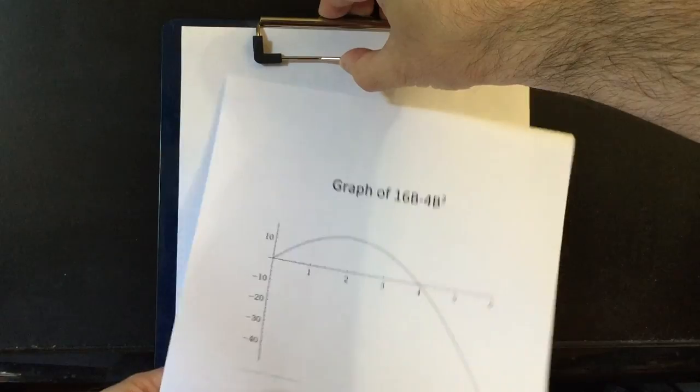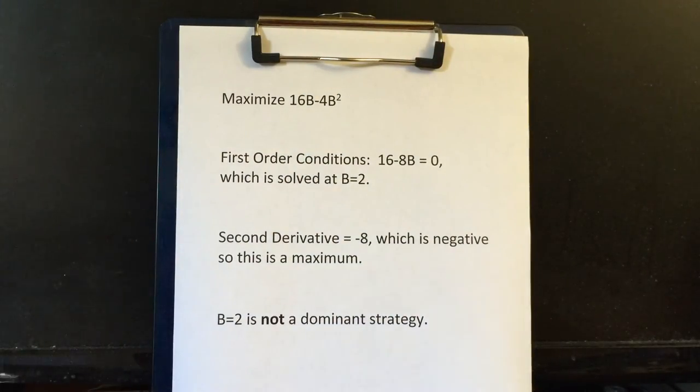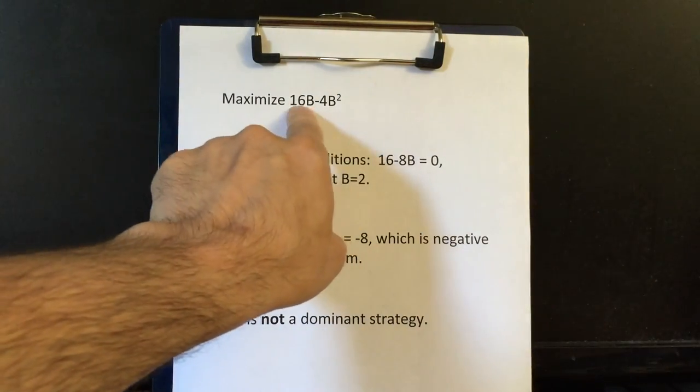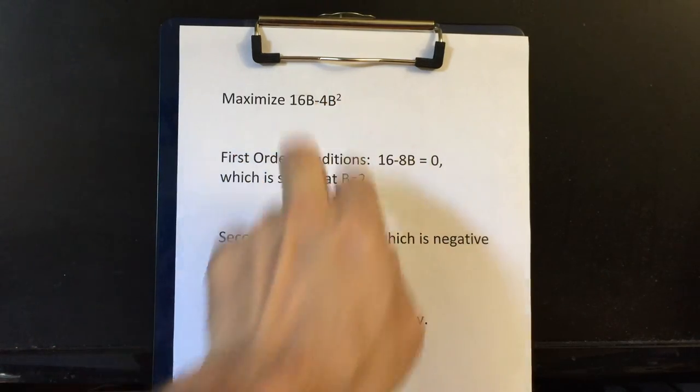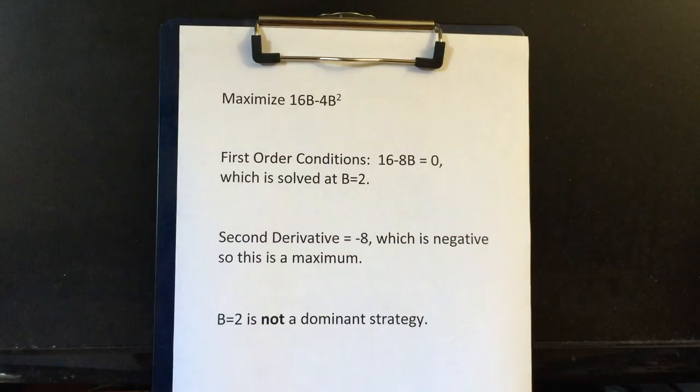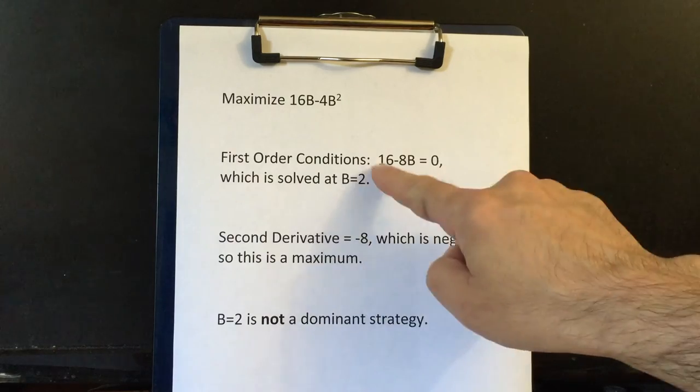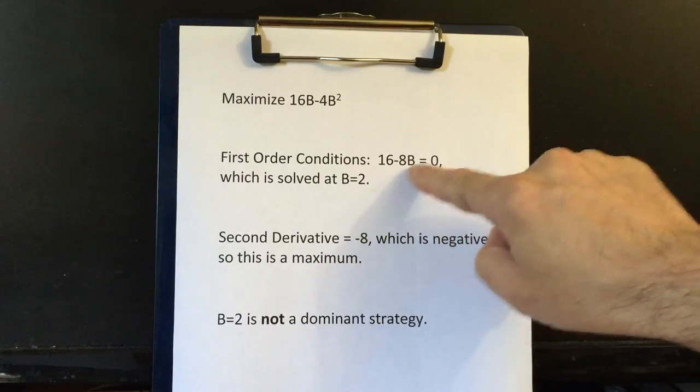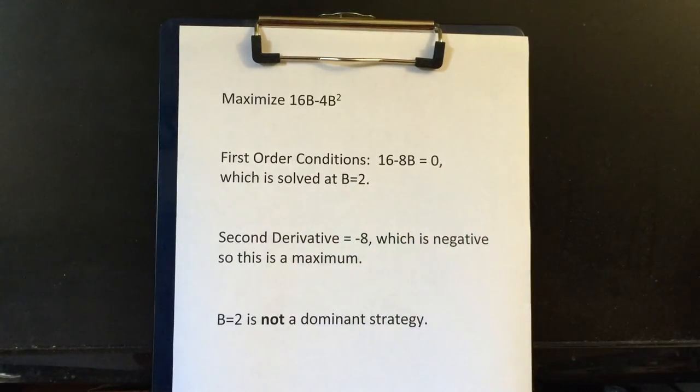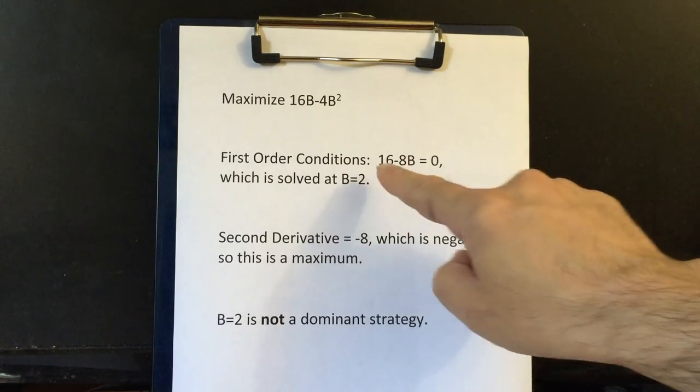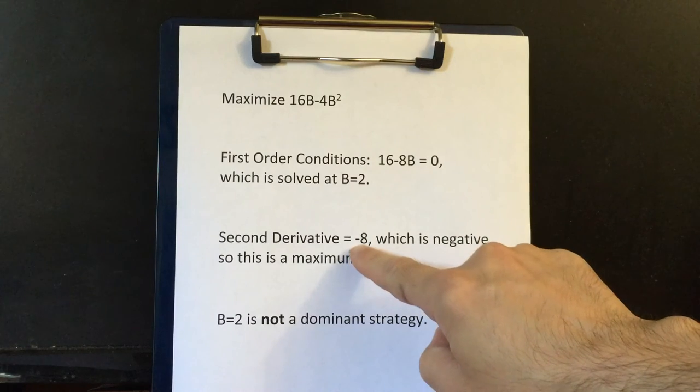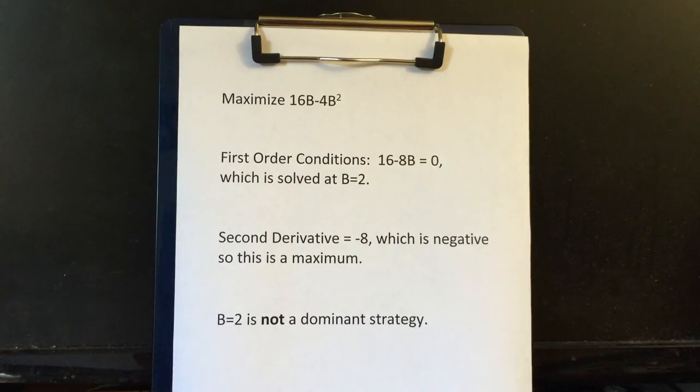So when we use calculus, we maximize this. If you're not comfortable with a B, you can just pretend that's an X and taking the derivative. We solve for first order conditions. First order conditions for a maximization mean you take the first derivative and set it equal to zero. And that is equal to zero at B equals two. Then we should check second order conditions. So that means we then take the second derivative and hope it's negative, which it is. So we found a maximum.